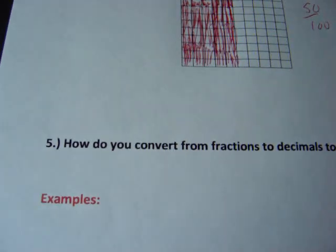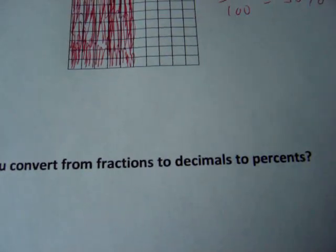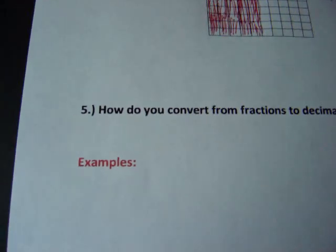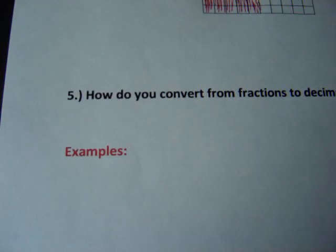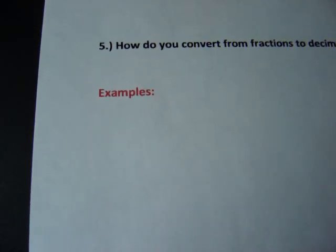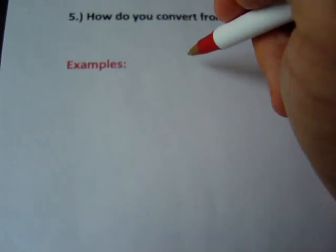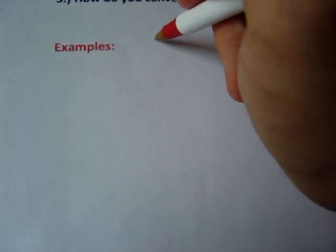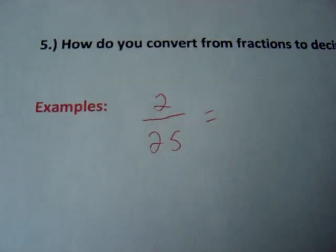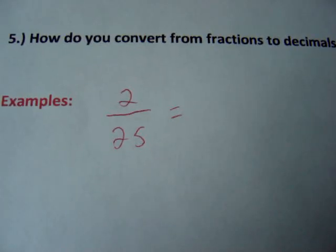Moving right along to essential question 5. How do you convert from fractions to decimals to percents and vice versa? Well, the first thing I'd like to start with is fractions. If percent means out of 100, you have to make sure your denominator is out of 100. So, for example, if we have 2 out of 25, or 2/25, and I want the percent here,